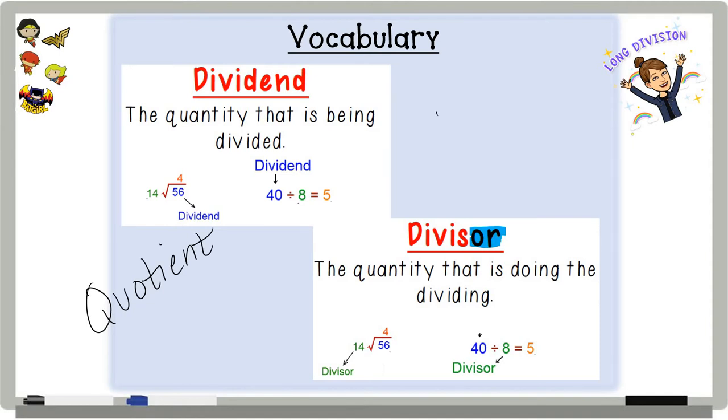And we also have the remainder in a division problem. The remainder is what's left over. Will there always be a remainder? No, sometimes that remainder will be zero, so it's non-existent. Sometimes there will be.